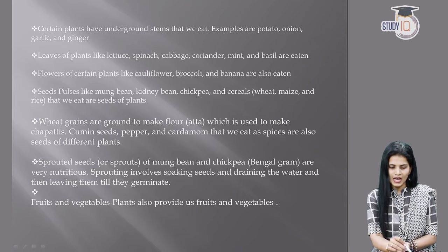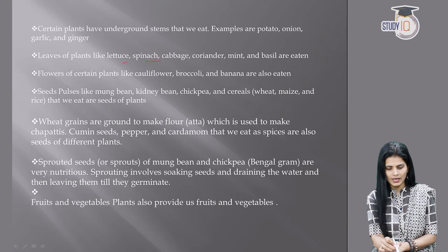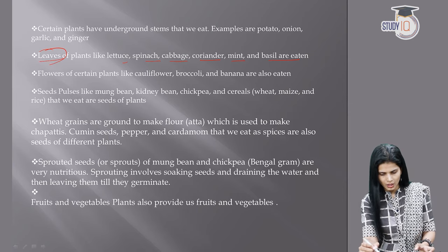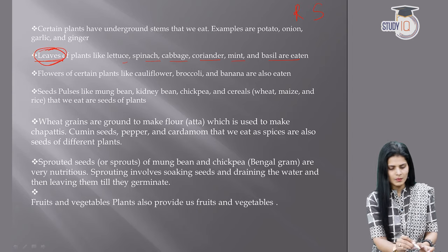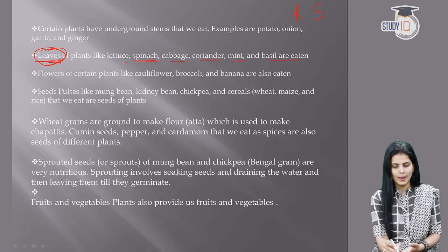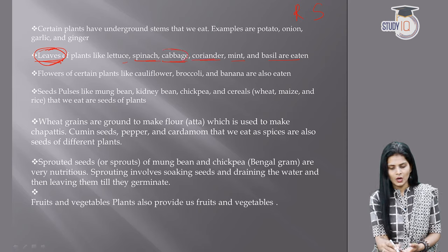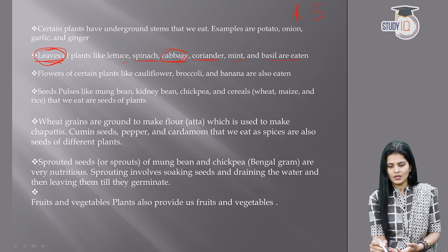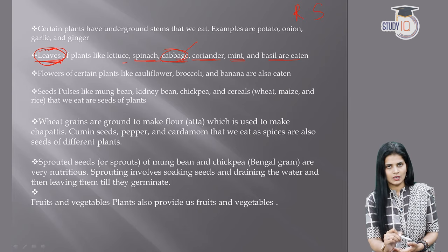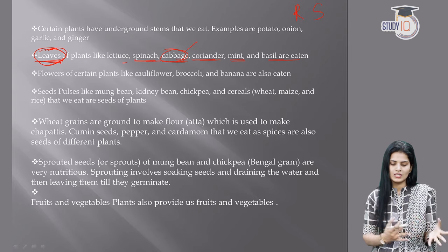Leaves of plants like lettuce, spinach, cabbage, coriander, mint, and basil are eaten. So far we've discussed roots and stems; now we look at leaves. Cabbage leaves are a good example — each peel of cabbage is a leaf. Don't confuse cabbage with a flower; cabbage is made of leaves.